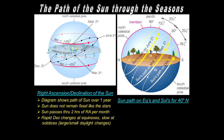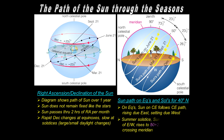At 40 degrees north latitude, the path of the sun at various dates shows that on the equinoxes the sun rises due east, rises up to 50 degrees in the sky, and sets due west. At the summer solstice, it rises 23.5 degrees north of east and sets 23.5 degrees north of west. At the winter solstice, it's 23.5 degrees south of those locations.